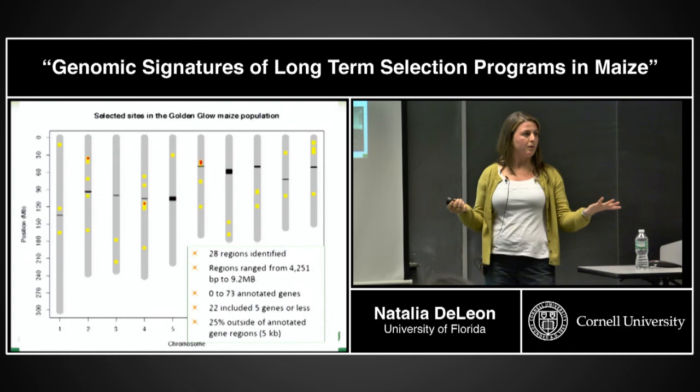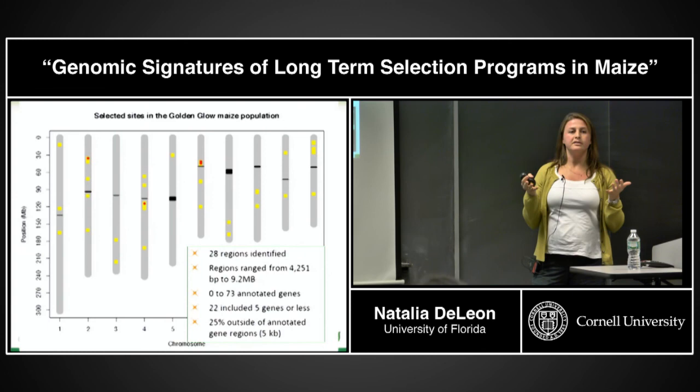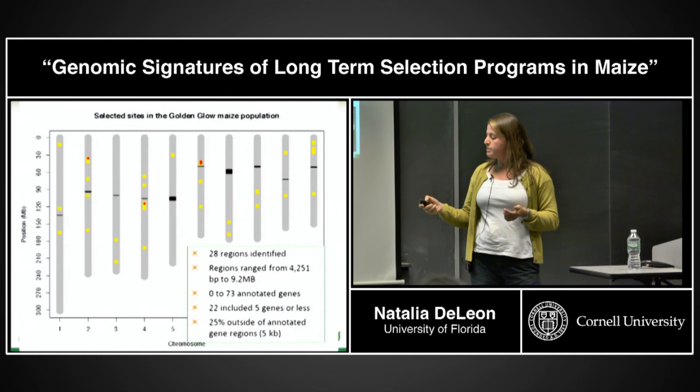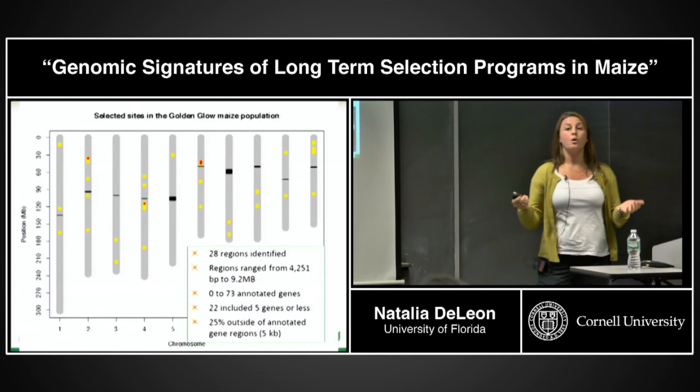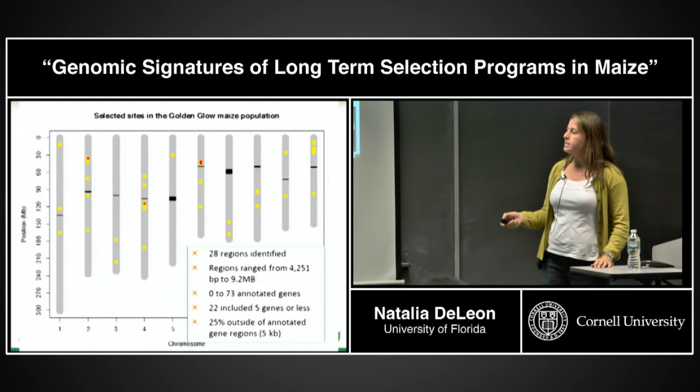Interestingly, about 25% of these regions included zero annotated genes anywhere within 5 kb to the right or left. There seem to be areas found in these analyses that are actually regulatory regions, or places in the genome with no annotated gene simply because Golden Glow is very different from the reference genome — something we are trying to understand further.